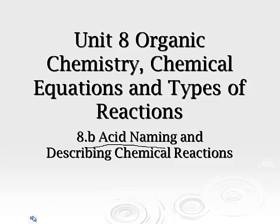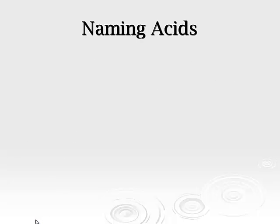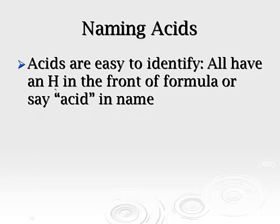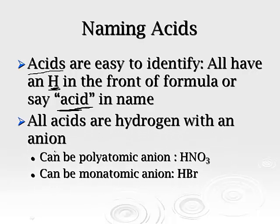With acid naming, there is another set of rules, so unfortunately that gets a little confusing, but acids are really easy to identify. They all have hydrogen out in front of them, or they say the name acid. That's your requirement for recognizing that something is an acid. All acids are going to be hydrogen paired with some anion, and you can have two options.